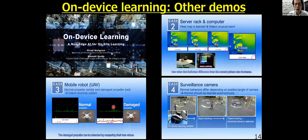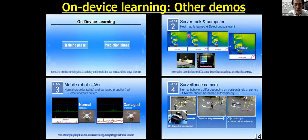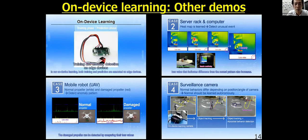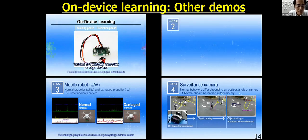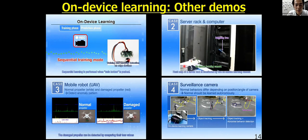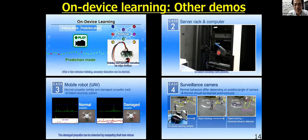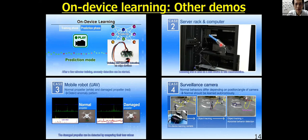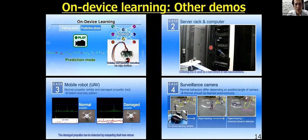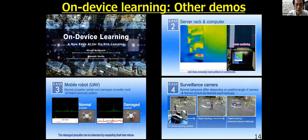Let me show you more demos. In the upper right video, on-device learning is used for detecting abnormal heat of server racks. It uses a thermal camera. The system learns normal heat patterns first, and then it can detect abnormal heat of machines in server racks.